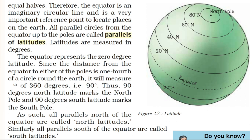The equator is an imaginary circular line and is a very important reference point to locate places on the Earth. All parallel circles from the equator up to the poles are called parallels of latitudes, which are measured in degrees. The equator represents the zero-degree latitude.